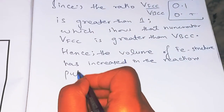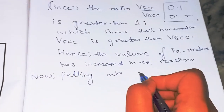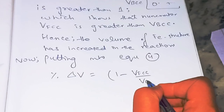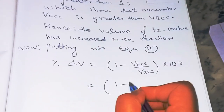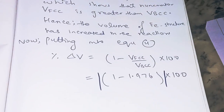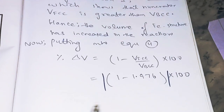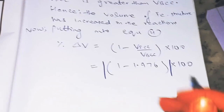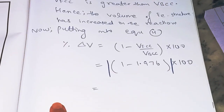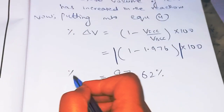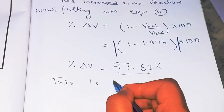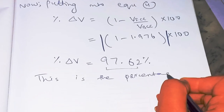Now substituting into equation four to find the percentage volume change: % ΔV = |1 − 1.976| × 100. We always take the absolute value for percentage volume change. Calculating this gives 97.62%. So the percentage volume change is 97.62%.